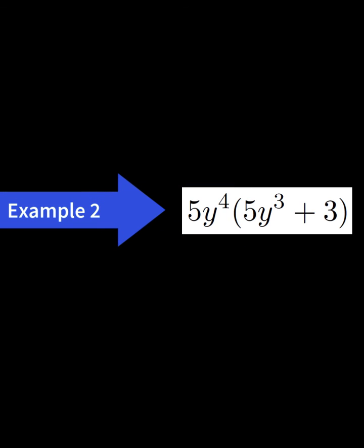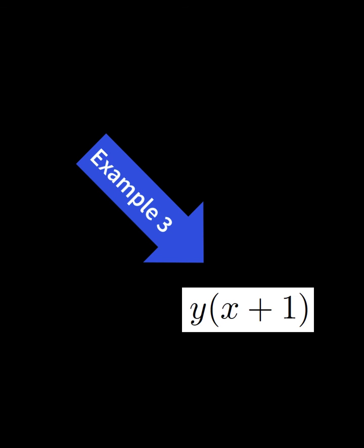The answer to example 2 is 5y to the 4th times (5y cubed plus 3). The answer to example 3 is y times (x plus 1).